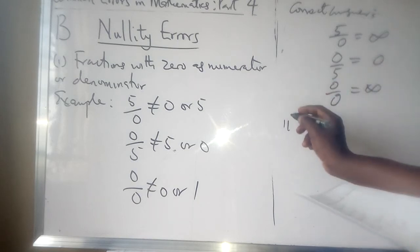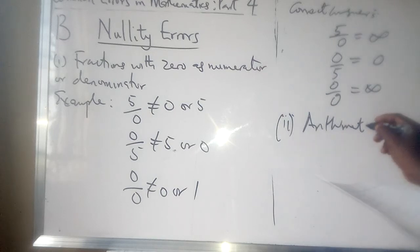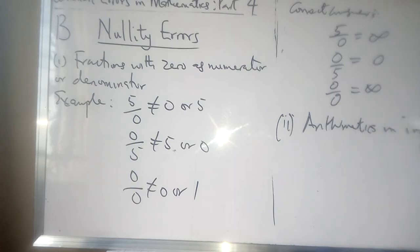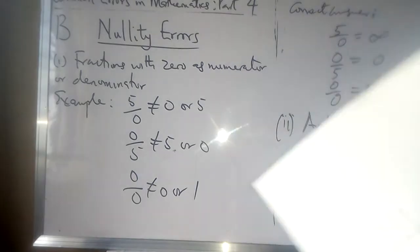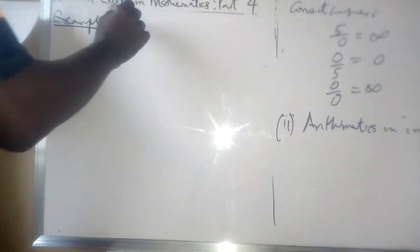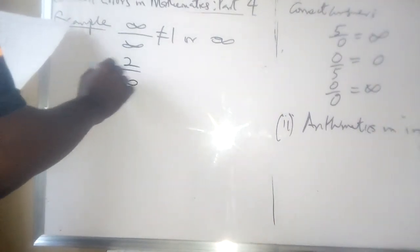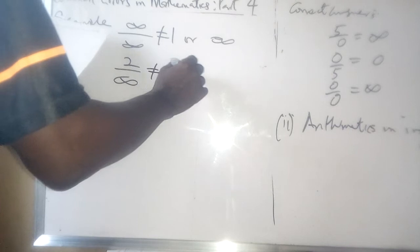Let's look at arithmetics in infinity as well — that is, arithmetic operations involving infinity. For example, infinity all over infinity is not equal to 1 or infinity — that would be wrong. And 2 all over infinity is not equal to 2 or infinity — that's wrong too.